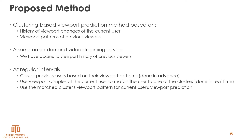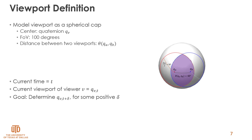We propose a method based on clustering of viewports. Both the history of the current viewer and previous viewers on the same content are considered for prediction. Previous viewports are clustered on the server side in advance. The current viewer's viewport is matched to one of the clusters in real time. Finally, the future viewport position of the cluster is used as the prediction for the user. We model viewport as a spherical cap with field of view equal to 100 degrees, which approximates head-mounted displays and makes viewport overlap calculation easier.